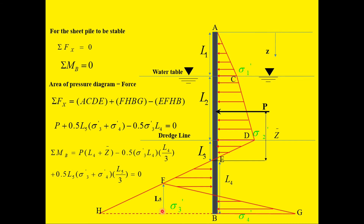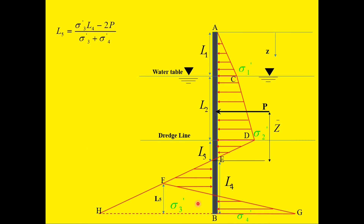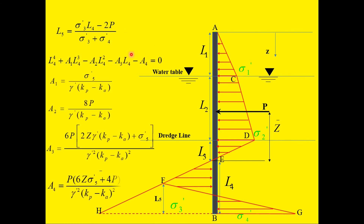Next, we determine L4 using a degree-4 polynomial equation: L4^4 + A1 × L4^3 − A2 × L4^2 − A3 × L4 − A4 = 0. To solve this polynomial, we estimate the coefficients A1, A2, A3, and A4, which can be determined from the corresponding equations.